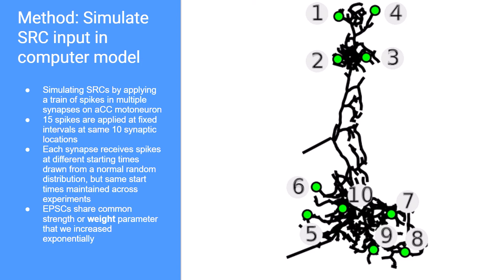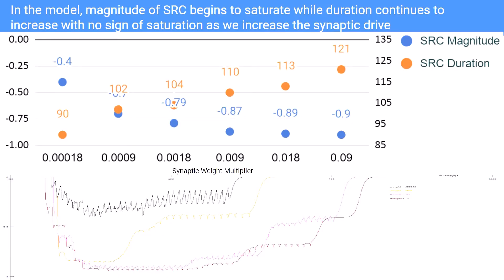We manipulated the weight parameter. The weight parameter is the combination of both the amount of vesicles released into the synaptic cleft as well as how responsive the synapse is to the neurotransmitter. The graphs above are of previous simulations I ran this semester in which I changed the weight parameter — those values are visible on the x-axis. I recorded the magnitude and duration of each simulation, and as you can see, the SRC durations increase indefinitely while the SRC magnitudes begin to saturate as the weight multiplier is increased.